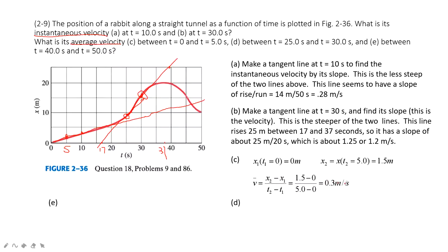And the second one, we want to find the average velocity between 25 to 30. So we can estimate at 25, it's around 8 meters. And at 30, it is around 16 meters. Then we can estimate the average velocity, x2 minus x1 divided by time taken. This is 1.6 meter per second.